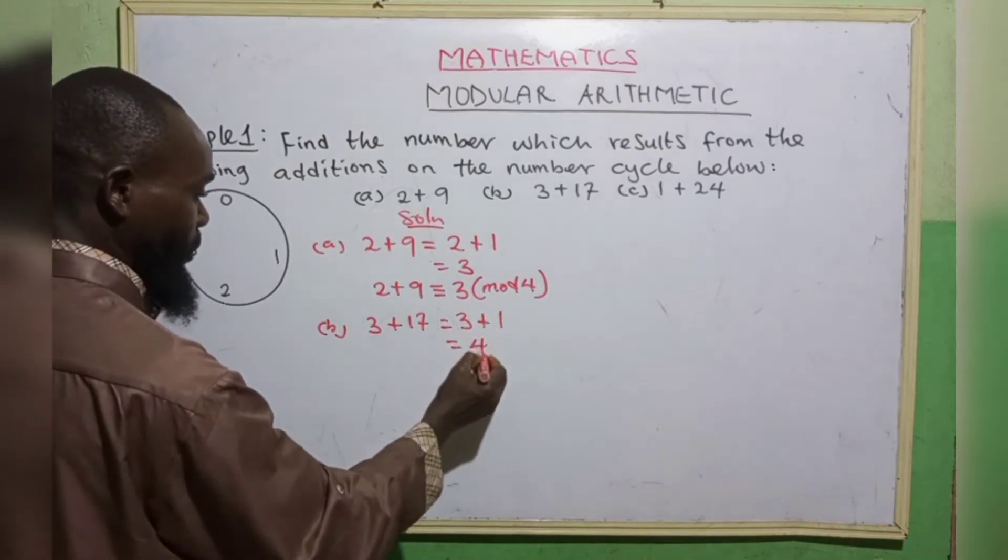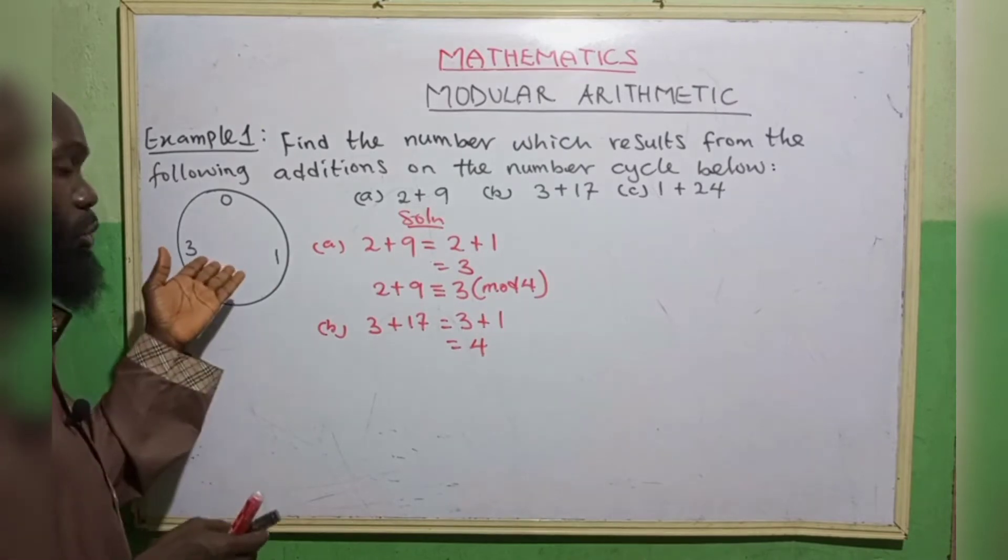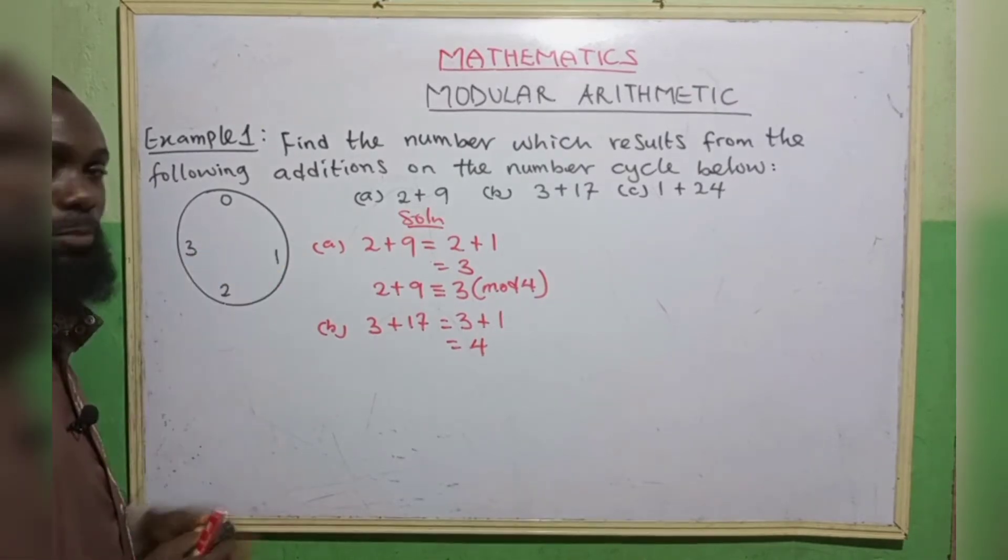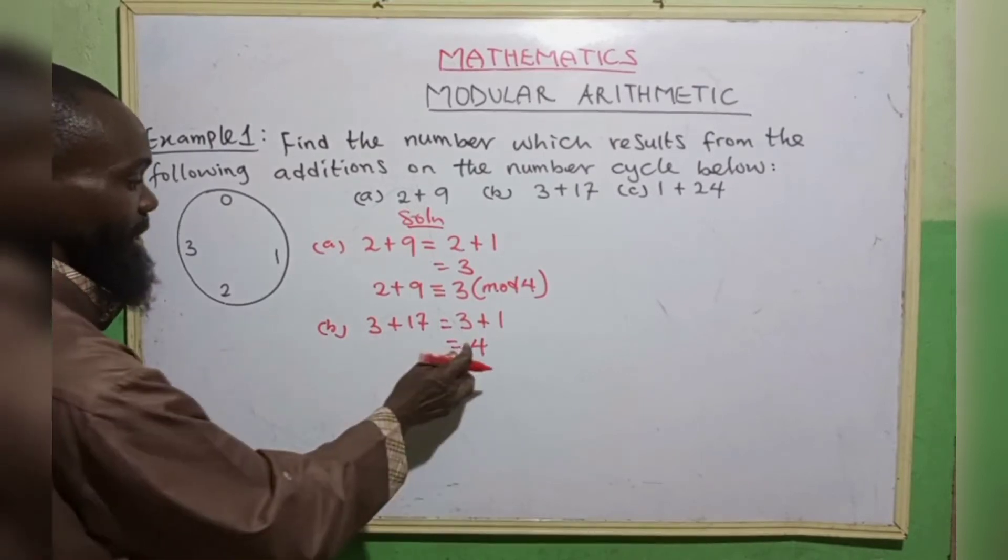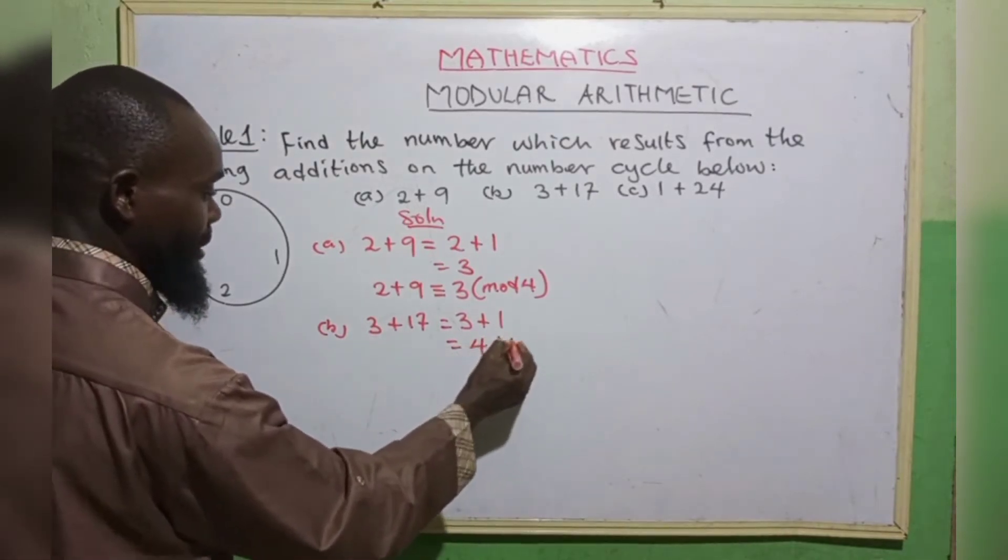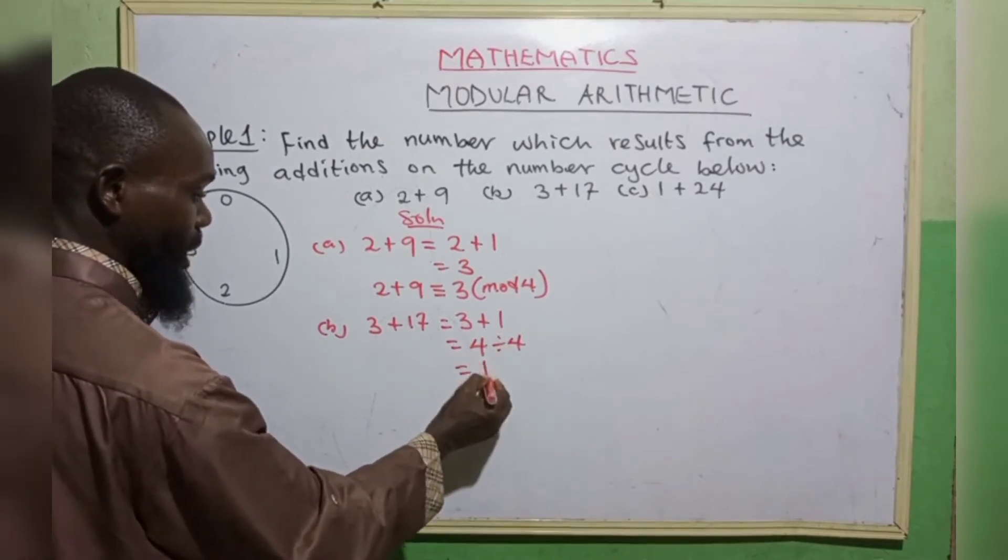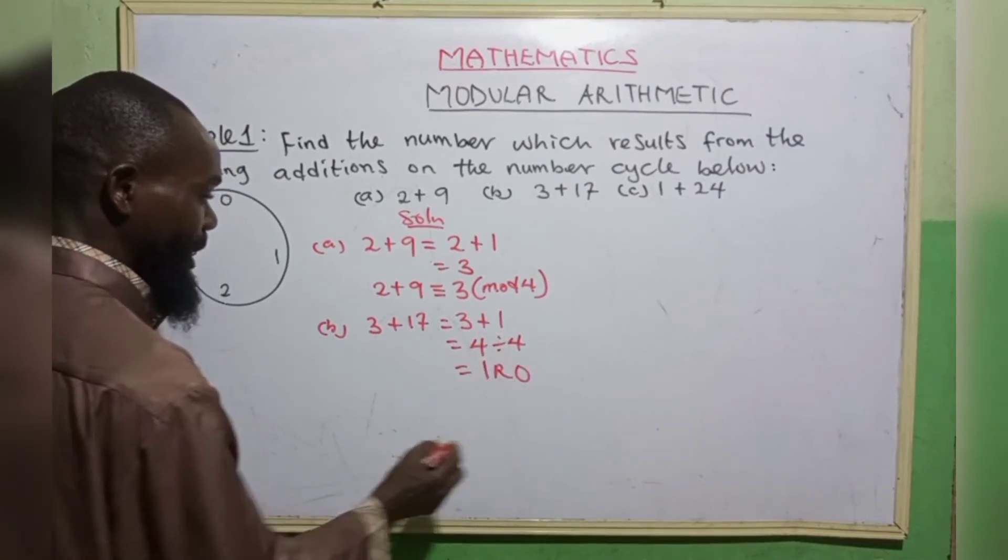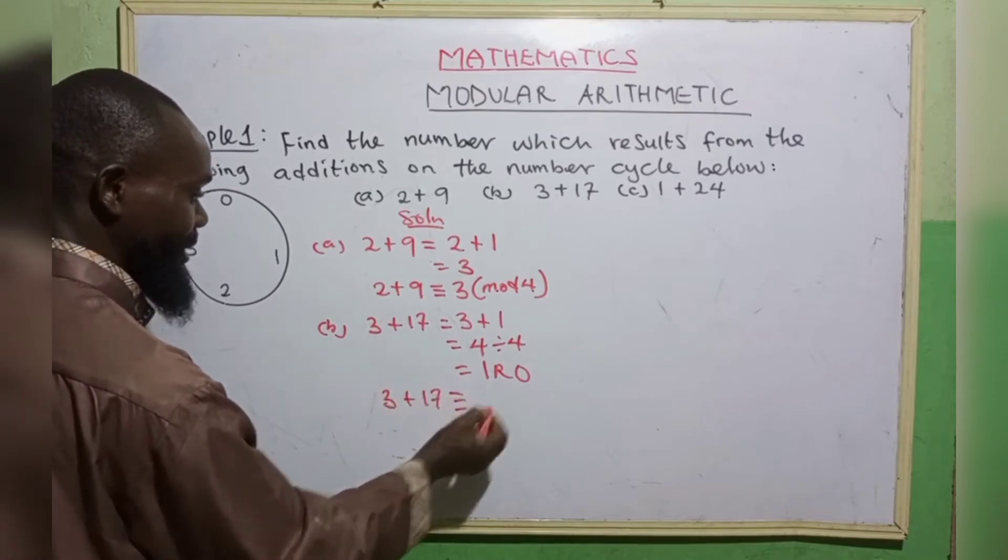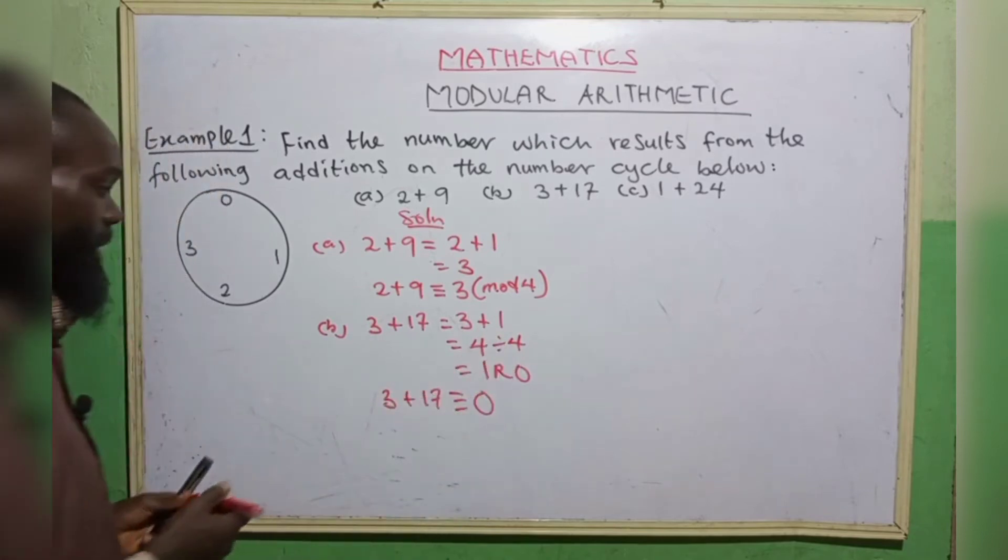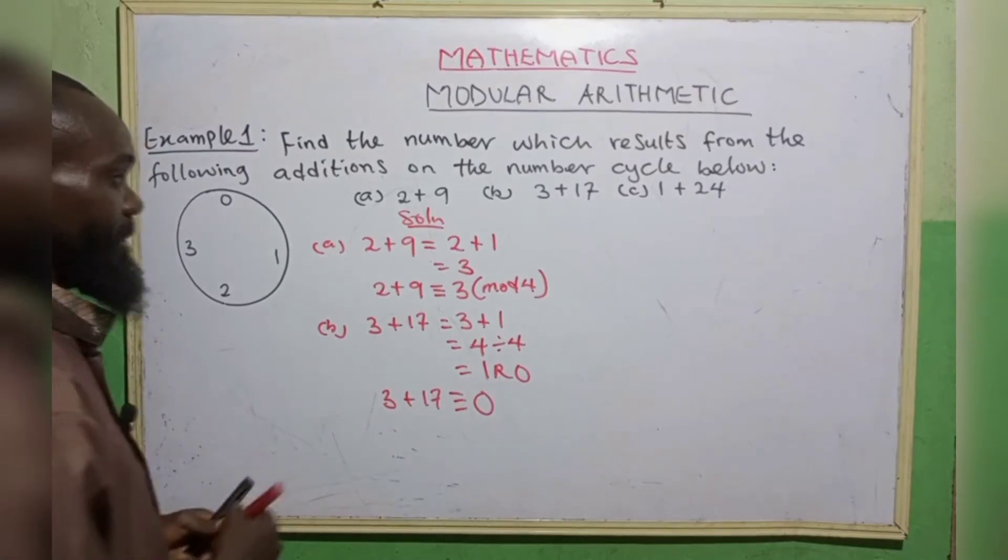So 3 plus 1 gives 4. But this 4 cannot be written, because this is in modulo 4. And in modular arithmetic, we deal with the remainder. That is, we now see, this 4 goes in modulo 4. 4 divided by 4 gives 1, remainder 0. It means that 3 plus 17 is equivalent to 0.